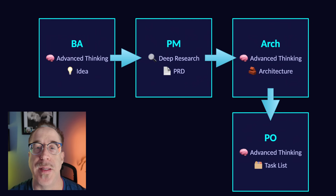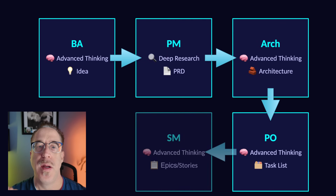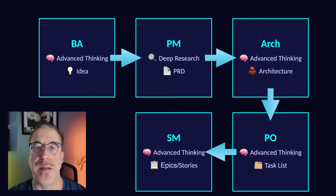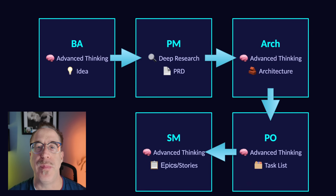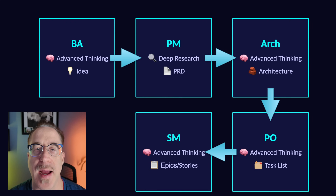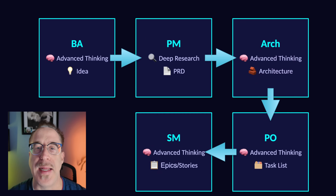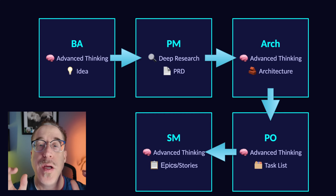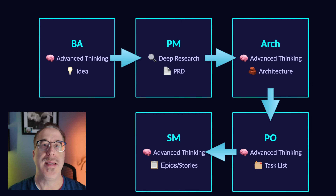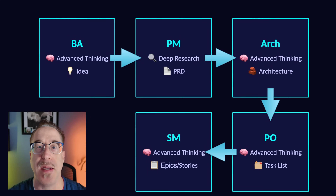The PO is going to hand this off to the Scrum Master. The Scrum Master is again going to use advanced thinking. And by the way, all of this we can be doing outside of Cursor, saving a ton of money producing these documents. I'm going to show you how — it's very simple, and you do not have to have a lot of industry experience to do this. This will save you so much time, and honestly, this can be the funnest part, really piecing out what your application is going to do and how it's going to do it.